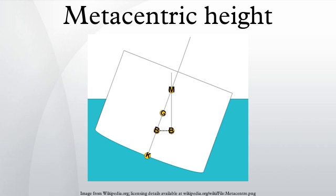Stable floating objects have a natural rolling frequency, like a weight on a spring, where the frequency is increased as the spring gets stiffer. In a boat, the equivalent of the spring stiffness is the distance called GM, or metacentric height, being the distance between two points: G, the center of gravity of the boat, and M, which is a point called the metacenter.